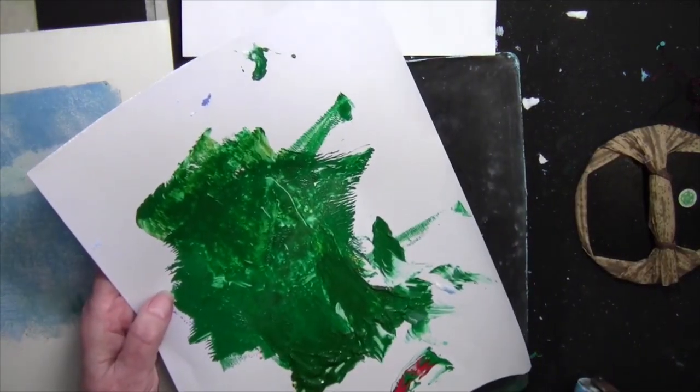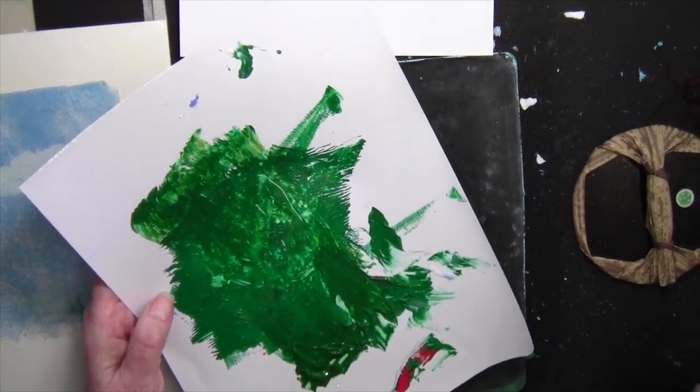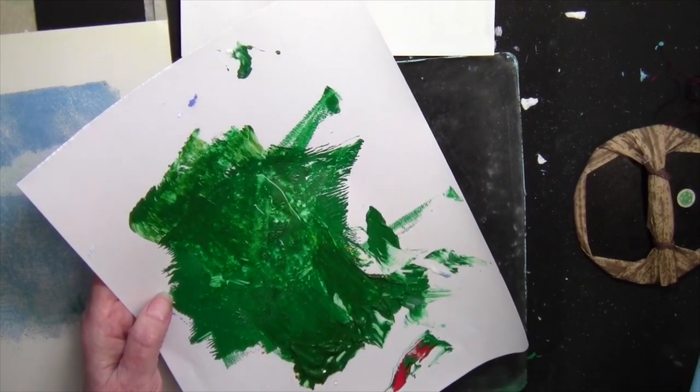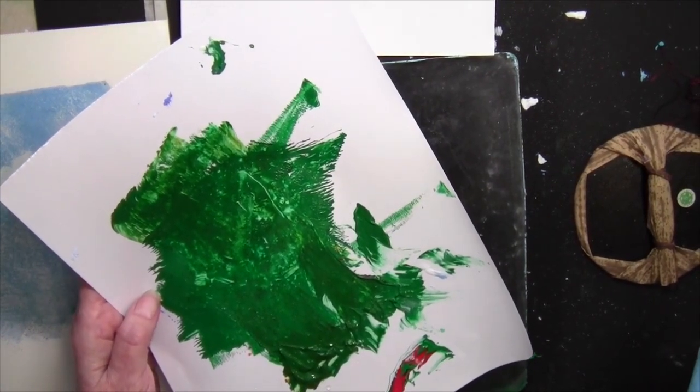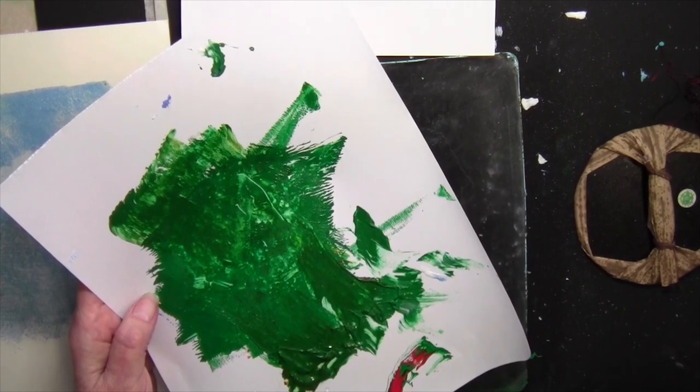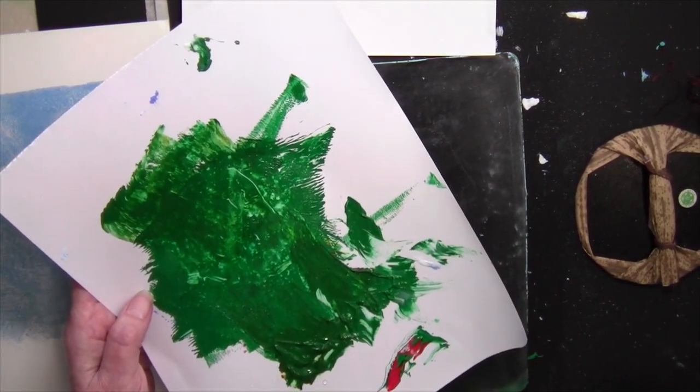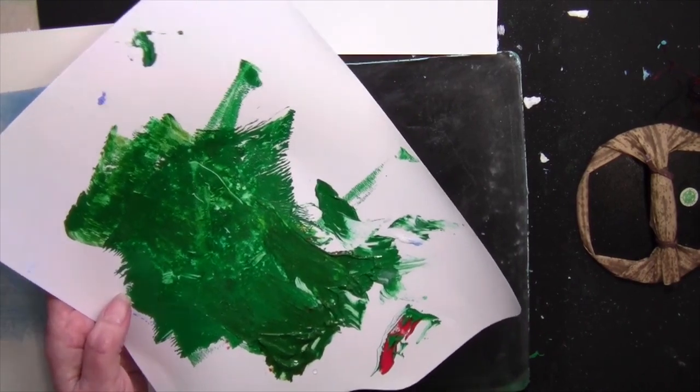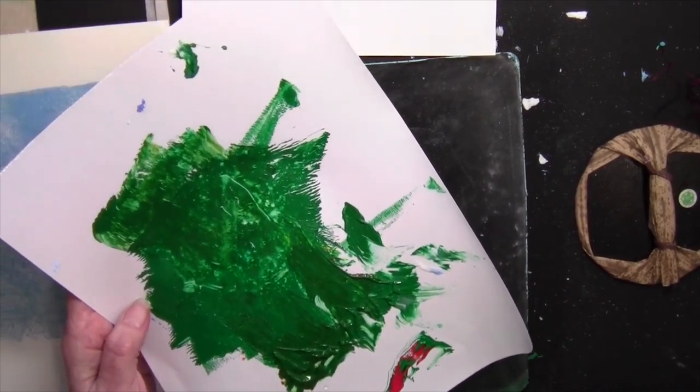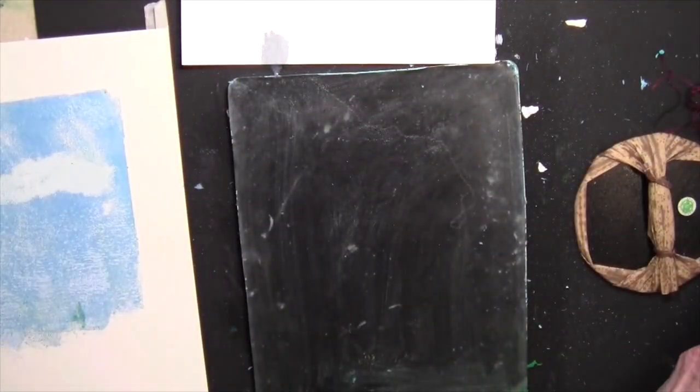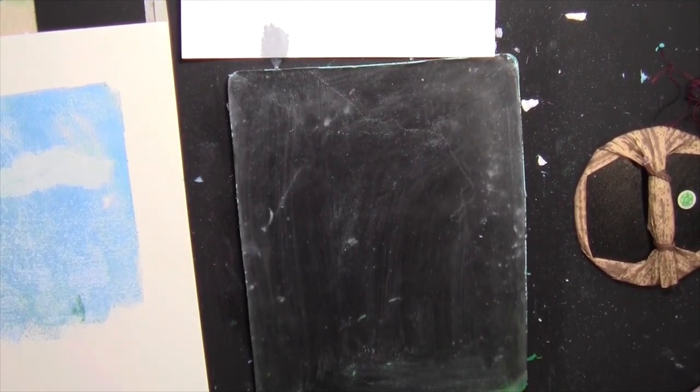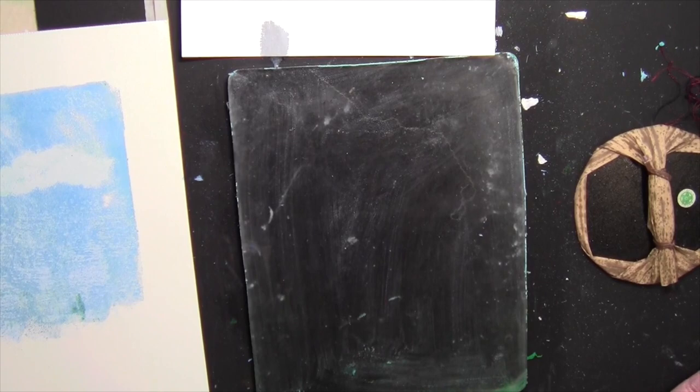And so for my color green, I have phthalo green blue shade and some quinacridone nickel azo gold in it. And also some cad yellow light and just a teeny touch of red, like a pea sized piece of red. And that was just to keep it from being so bright and artificial looking. It kind of made it, by adding the color complement, it made it a little earthier.